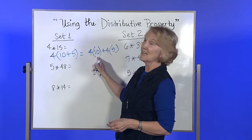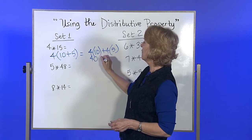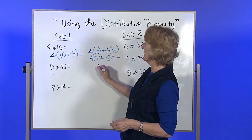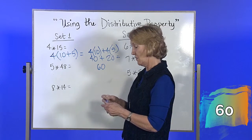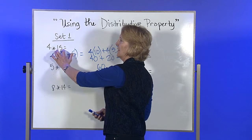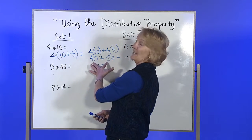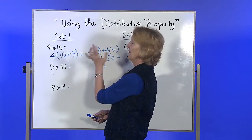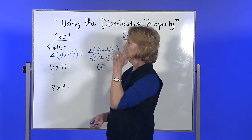4 times 10, you're going to get really good at being able to go 4 times 10, that's 40. 4 times 5 is 20. The only things you really had to add up are the two numbers in the tens column. I want you to be able to do it in your head.